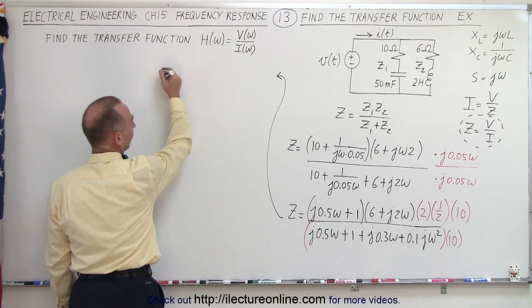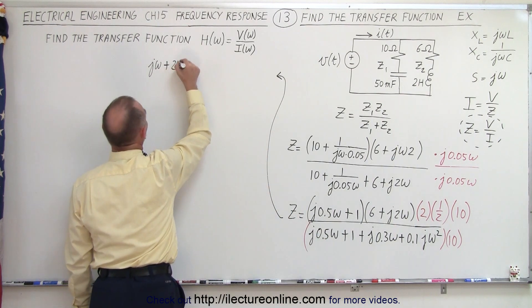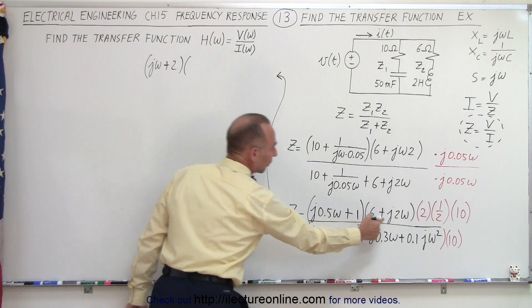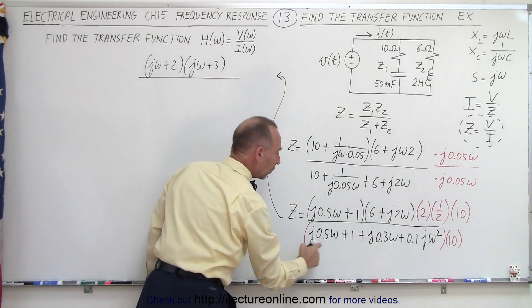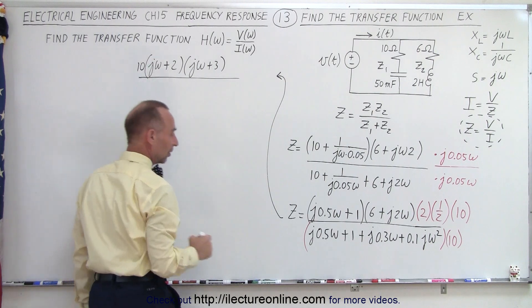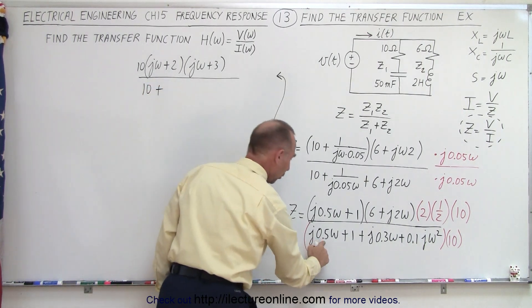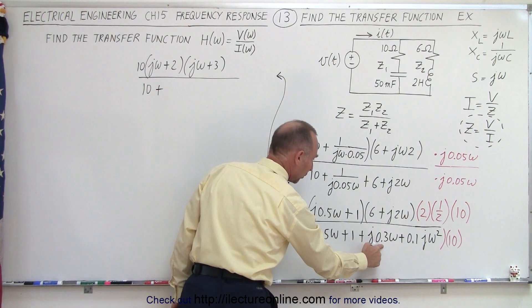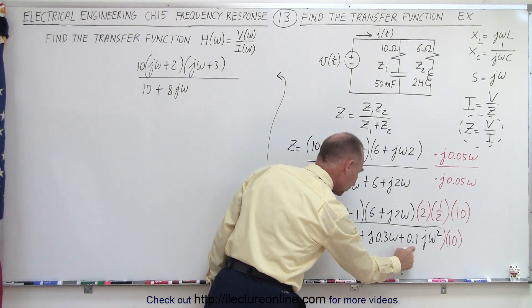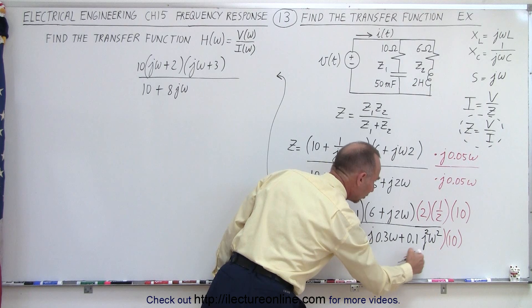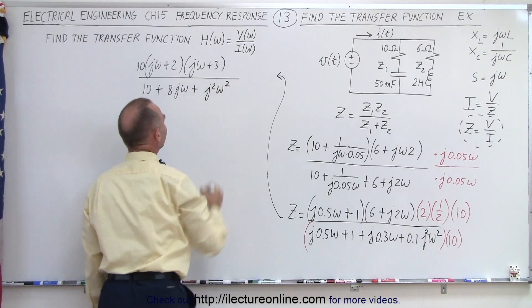So, first of all, multiply this by 2. I get 1 J omega plus 2. Now, I'm going to multiply that times, divide this by 2. I get 1 J omega plus 3 in the numerator, all divided by, I still have a 10 here, so I can't forget the 10. I'll put the 10 in the front. And then here, I'll get 1 times 10 is 10 plus 0.5 plus 0.3. That's 0.8, but times 10, that would be 8 J omega. And then, finally, I have 10 times this, which gives me plus 1 times J squared omega squared.